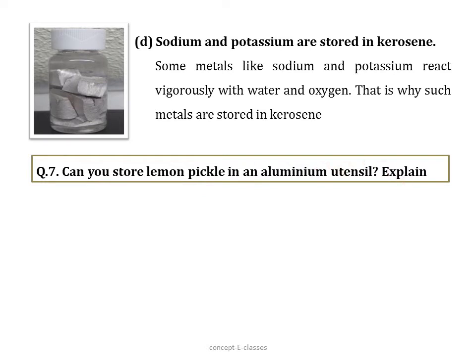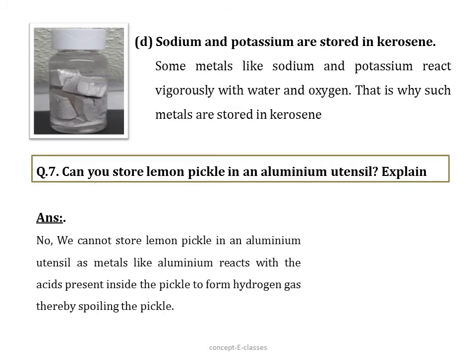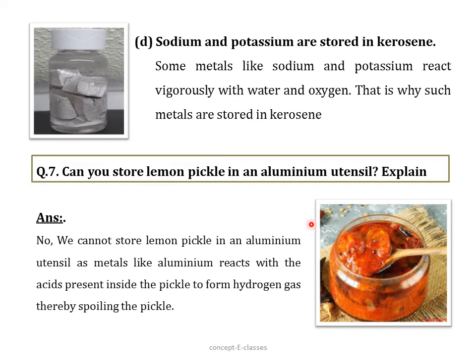Question number seven: can you store lemon pickle in an aluminium utensil? No, we cannot. Metals like aluminium react with the acids present in the pickle to form hydrogen gas, thereby spoiling the pickle. This also corrodes the metal, making the food unsafe to eat. We should always store pickles in plastic or glass jars.